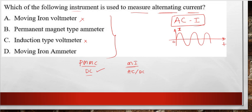Induction type voltmeter is for AC measurement using induction principle. Moving iron ammeter is used for AC current. It can be used for both AC and DC. So the right answer for this particular question is moving iron ammeter.